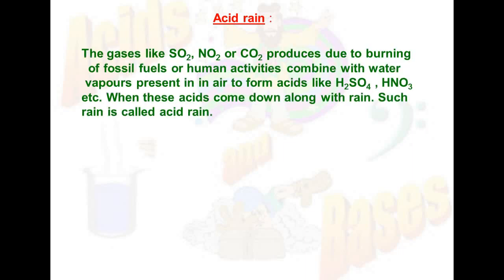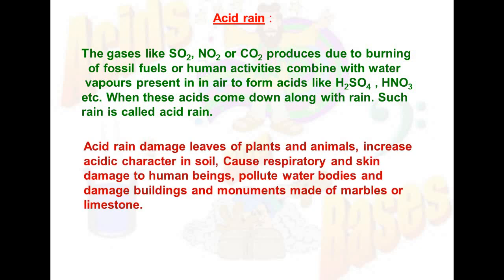Acid rain: The gases like sulfur dioxide, nitrogen dioxide, or carbon dioxide produced due to burning of fossil fuels or human activity combine with water vapor present in air to form acids like sulfuric acid, nitric acid, etc. When these acids come down along with the rainwater, such rain is called acid rain. Acid rain damages leaves of plants and animals, increases acidic character in soil, causes respiratory or skin damage to human beings, pollutes water bodies, and damages buildings and monuments made of marble or limestone.